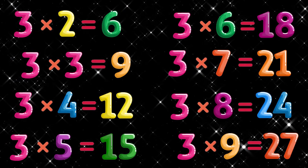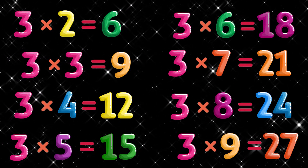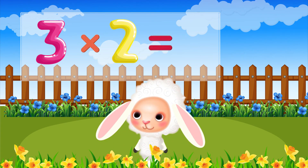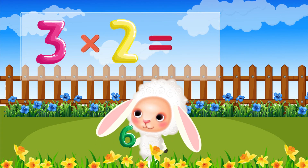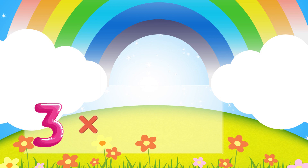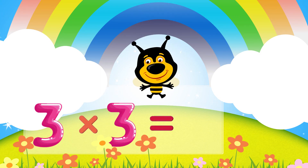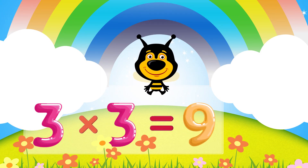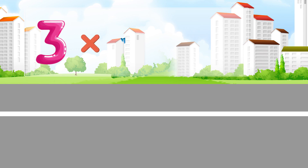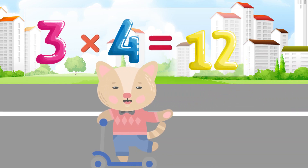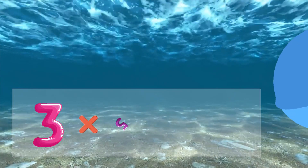Let's sing again. Three times two is six. Three times three is nine. Three times four is twelve.